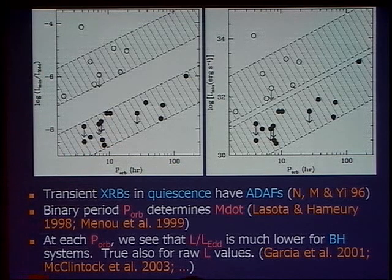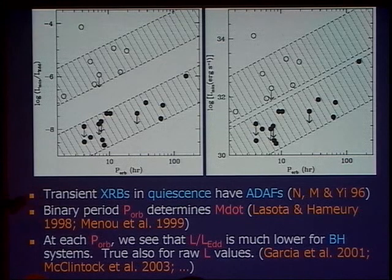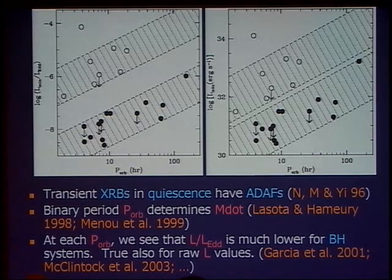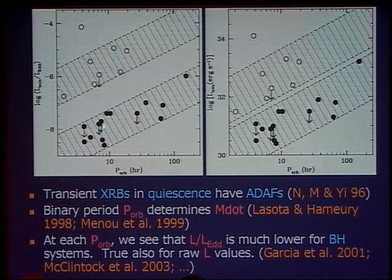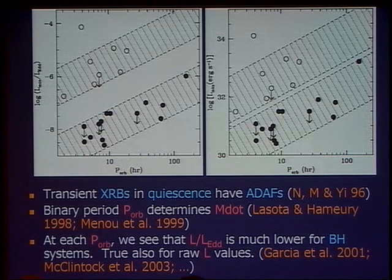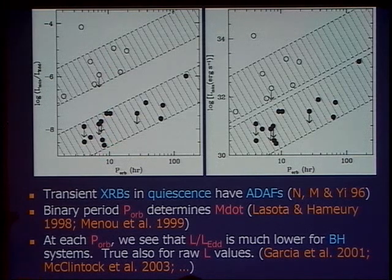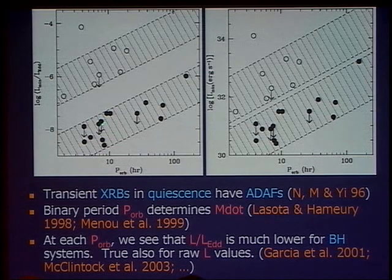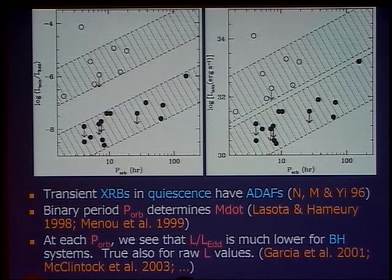This was an advance that came after our first paper, introduced by Lasota and Amuri, Menuh et al., and then explained in other papers. Using ordinary binary physics and mass transfer physics, you can show that neutron stars and black holes — independent of mass, more or less — would have roughly the same mass transfer rate at a given orbital period. That's the reason for plotting it as a function of orbital period: we may not know how to calculate m-dot, but we feel the m-dot of these systems should be the same if you compare them at the same orbital period.